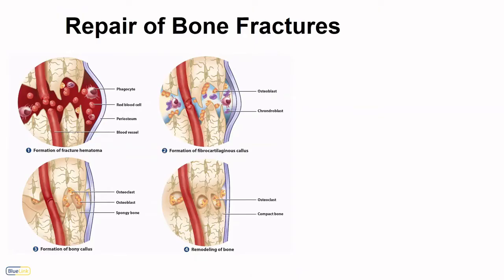Fracture repair starts with a lot of blood, and then the bone goes through a process very similar to endochondral ossification. What's different is that here we see a fibrocartilaginous callus holding the bones together, which is then replaced by a bony callus. In endochondral ossification this model was hyaline cartilage, whereas here we see fibrocartilage. Eventually the fibrocartilage and bony callus will be removed through resorption via osteoclasts and the structure of the bone will be restored.